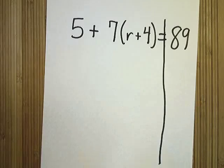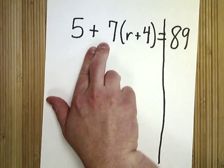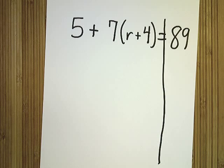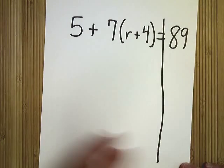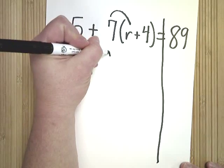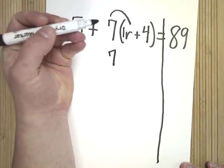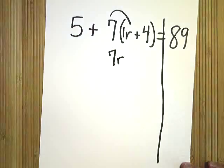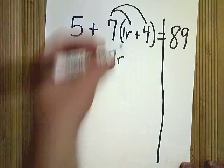The second step is Baby Goes Bathroom. I hope that you are not tempted to add five and seven together to make twelve, because that's not the step. You have to do Baby Goes Bathroom. That has to happen first. Seven times r, and that's seven times one r, in case you didn't remember. So seven times one is seven. Seven times positive four is twenty-eight.